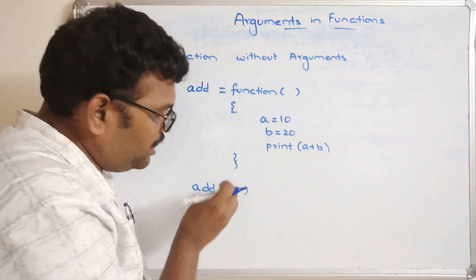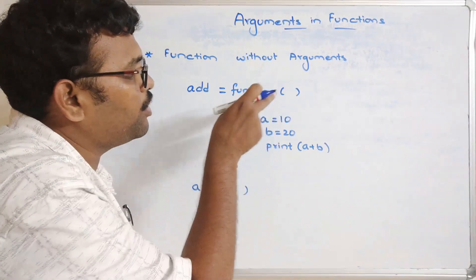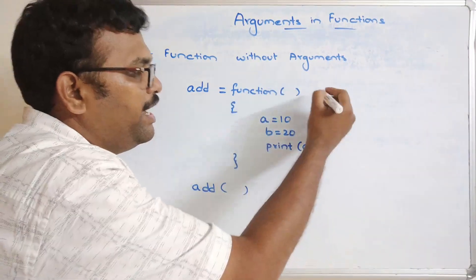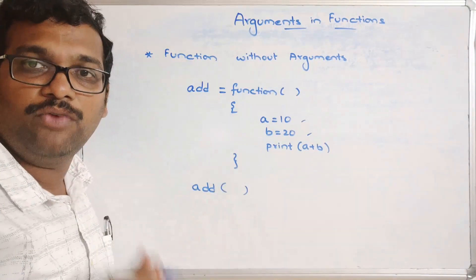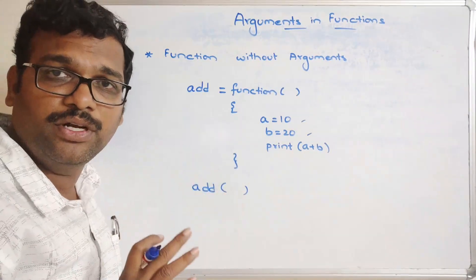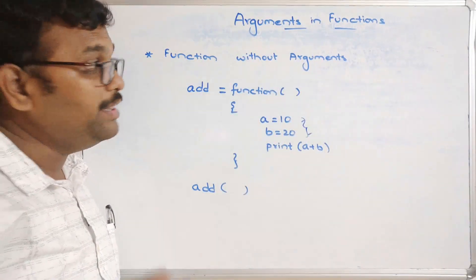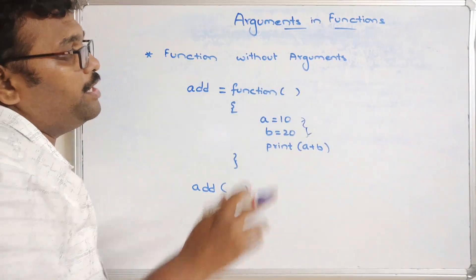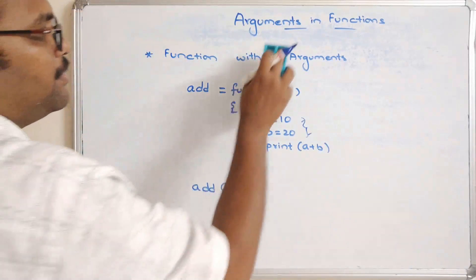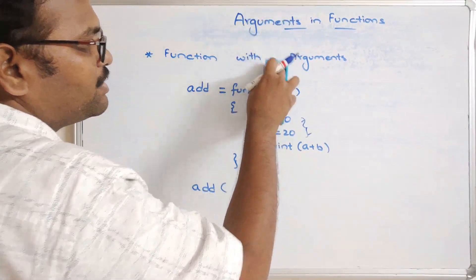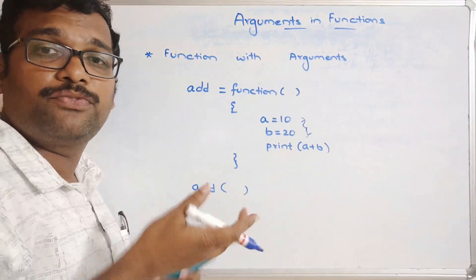Without the function call, this code will not be executed. Here we are not passing any arguments, so once the function call is executed, the control immediately moves to the function definition. Inside, we are taking two inputs and performing the addition logic. The parameters are taken inside the function itself, so there is no need to give arguments — it's not compulsory.